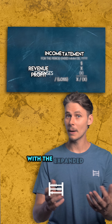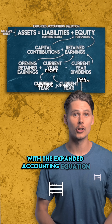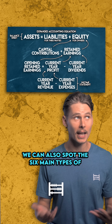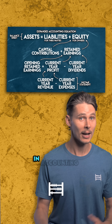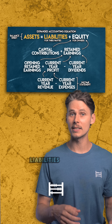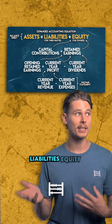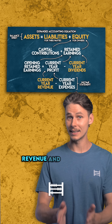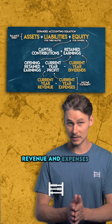With the expanded accounting equation we can also spot the six main types of account in accounting: assets, liabilities, equity, dividends, revenue and expenses.